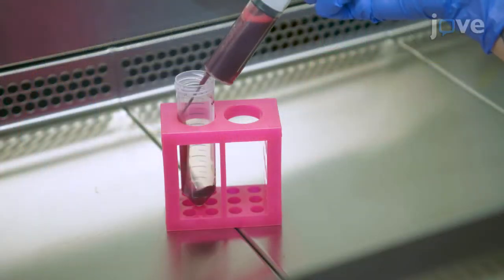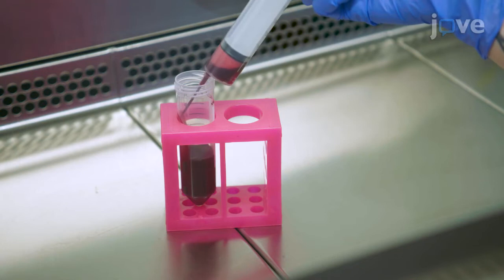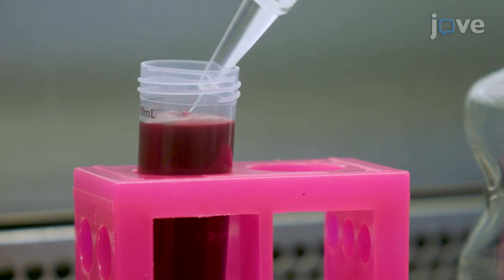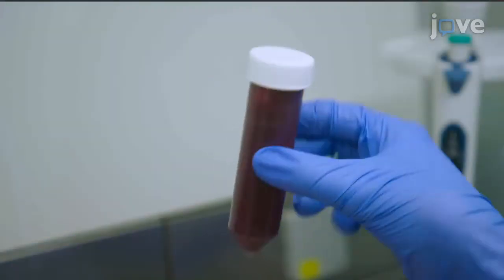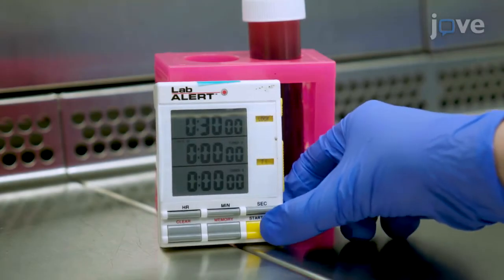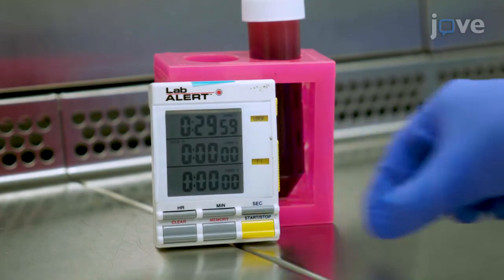Transfer the collected red blood cells into a new 50ml tube and dilute the cell suspension by half with 2% dextran. Mix well to aggregate the blood cells and allow the cells to sediment for 30 minutes at room temperature.